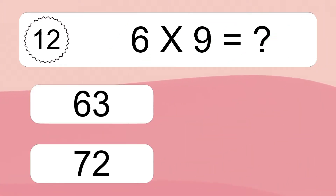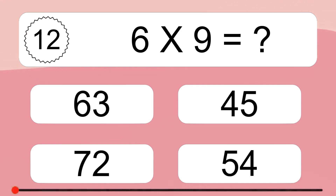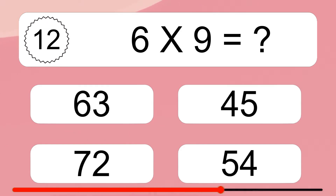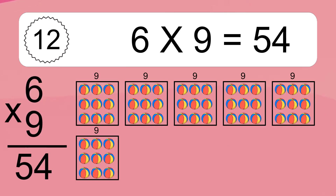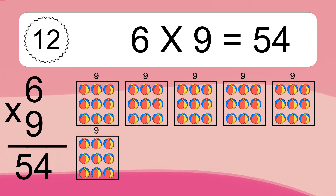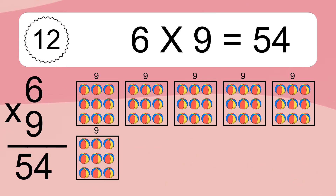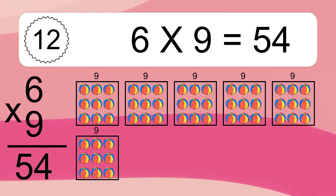6 times 9 equals what? 6 times 9 equals 54. We have 6 boxes, and each box has 9 colorful balls inside. If you count all the balls in all the boxes together, you will have 6 times 9 balls. This equals 54 balls.